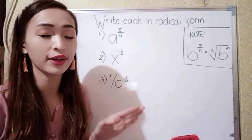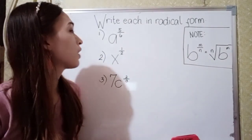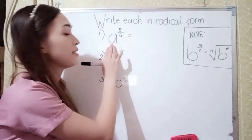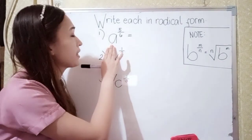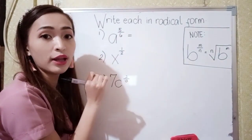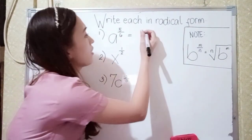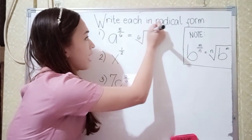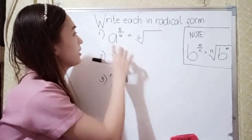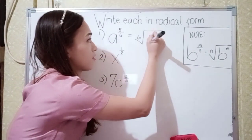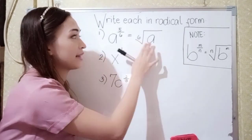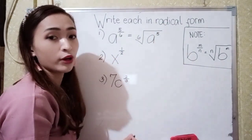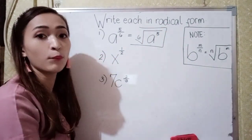For number 1, we have A raised to 5 over 6. A is our radicand, 5 would be our exponent, and 6 would be our index. So we write the radical sign with index 6, the radicand A which is the base, and since our exponent is our numerator, it is raised to the fifth power. This is the answer for number 1.